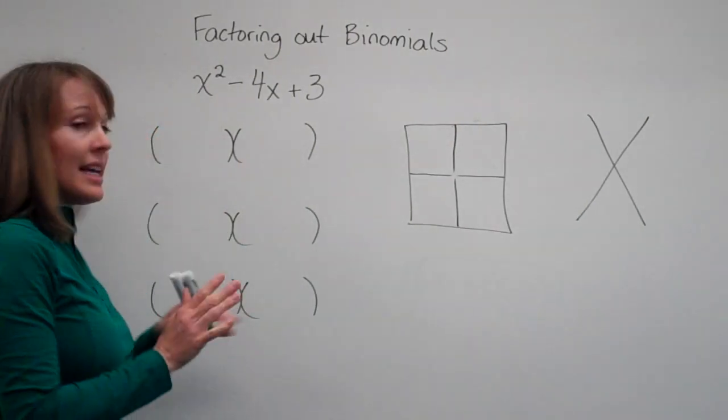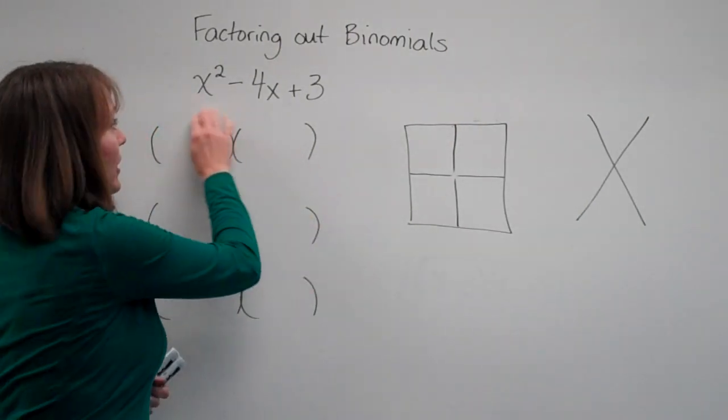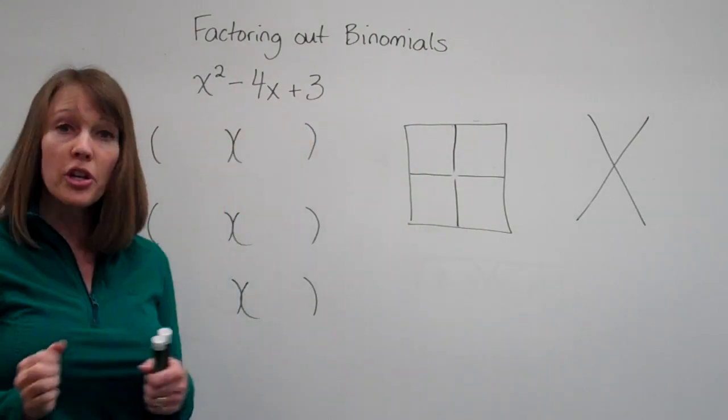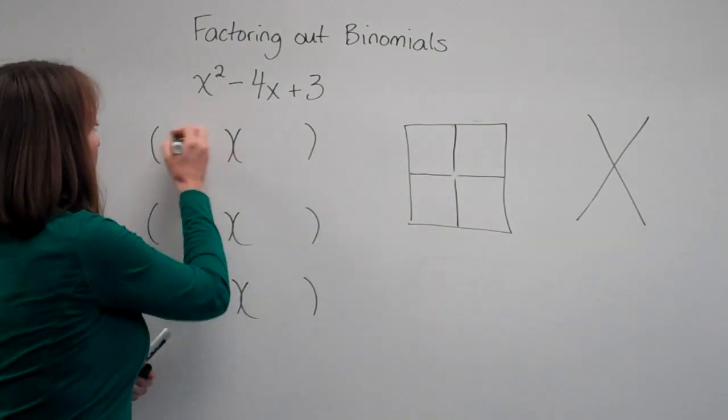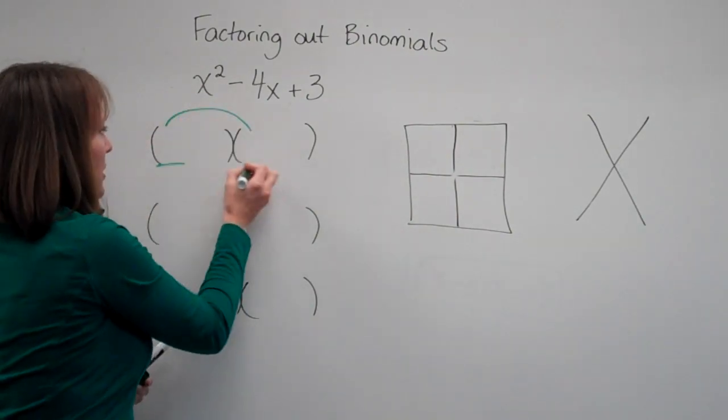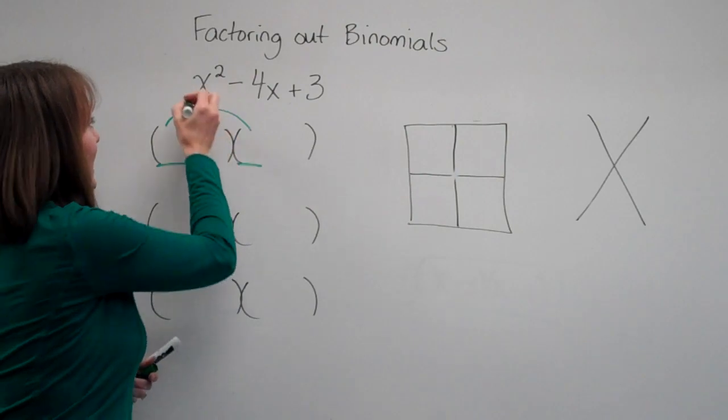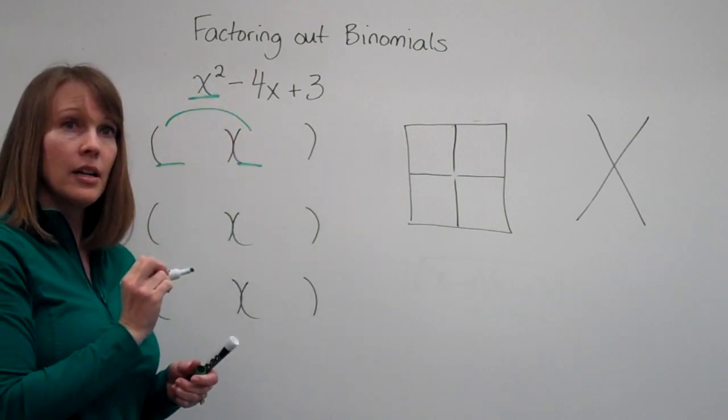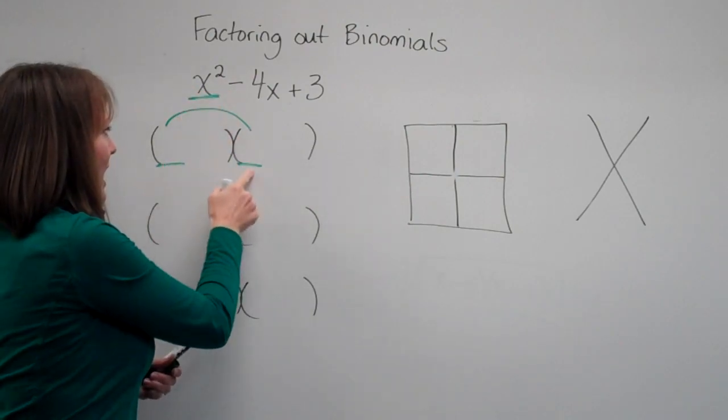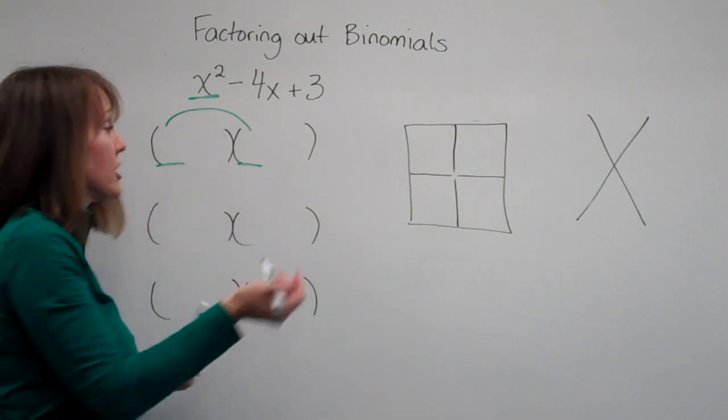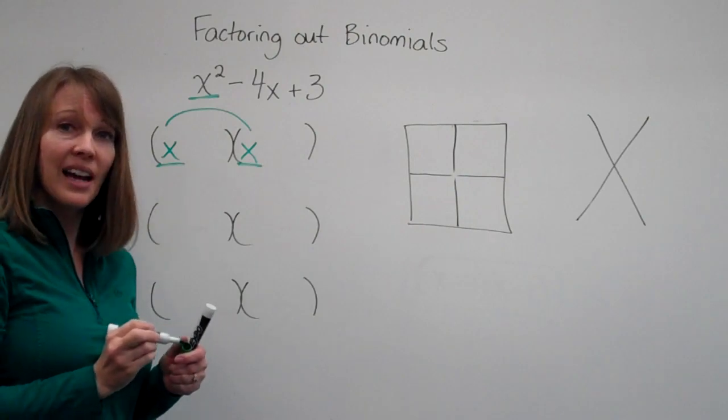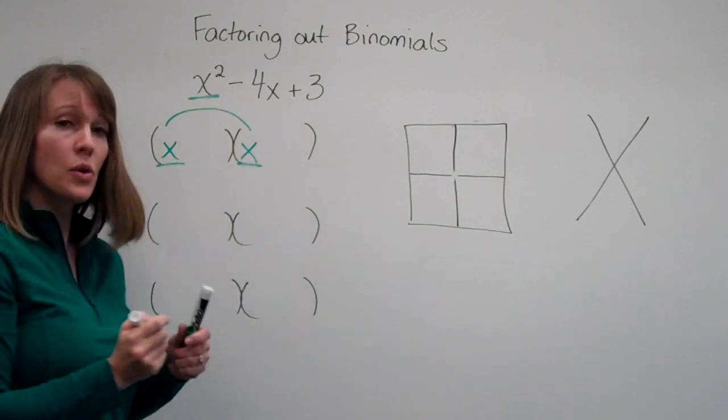Let's go back to what we just did. Here is our trinomial and we're going to try and find the binomials we multiply together to get it. Recall that we multiply the first space here and here to get the first term. So two things multiply together to get x squared and they're binomials. This first space is going to be x times x to give us our x squared.